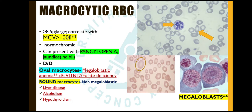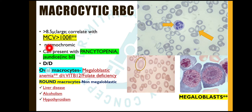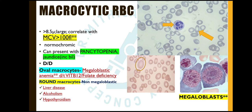Next we come to macrocytic RBCs. Macrocytic RBCs are larger in size — more than 8.5 microns — and correlate with a mean corpuscular volume of more than 100 femtolitres. These cells are normochromic, so MCHC will be normal. Megaloblastic anemia is the most common cause of macrocytic anemia and can present with pancytopenia because there is a defect in nuclear maturation affecting all cell lineages.